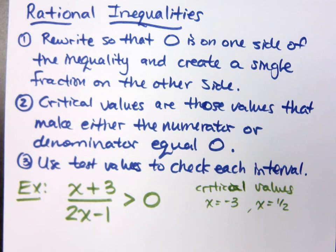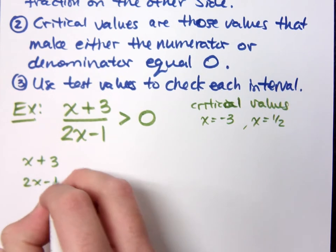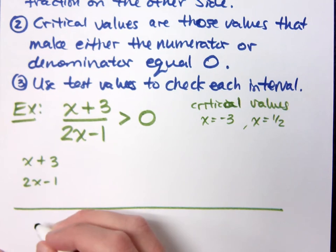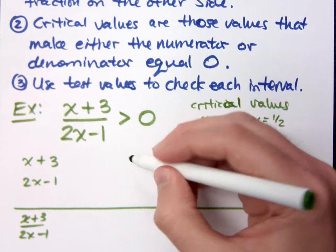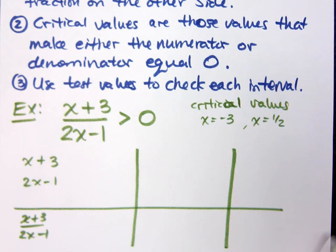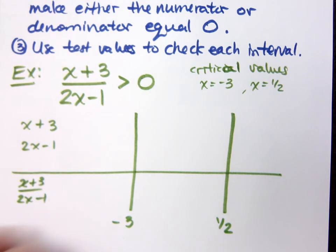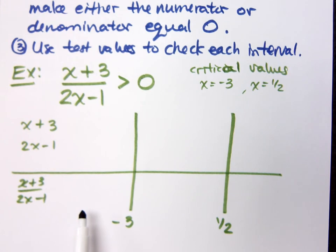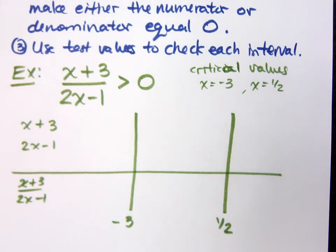Remember what we did yesterday with the sign analysis — we took our factors and wrote them down the left side. I'll write my expression x plus 3 over 2x minus 1, with the two critical values at negative 3 and one half. You can plug in test numbers from each interval into the original expression to check the sign, but I have an easier way.